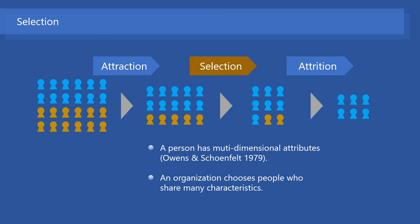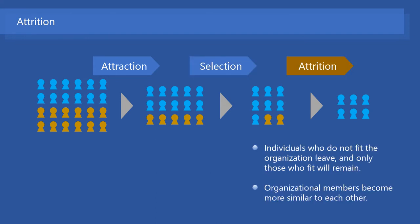In the selection process, organizations further restrict the range of people's types. An organization chooses people who share many characteristics with the organization; therefore, organizations tend to hire only a particular kind of people. In the attrition process, individuals who do not fit the organization leave, and only individuals who fit will remain. Accordingly, organization members become more similar to each other.